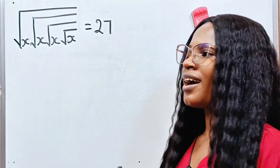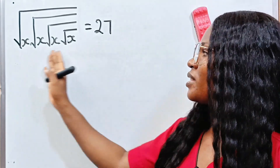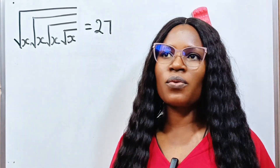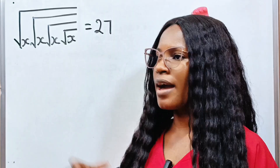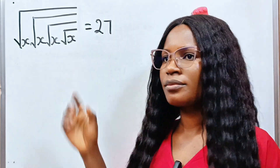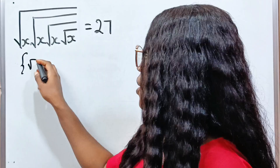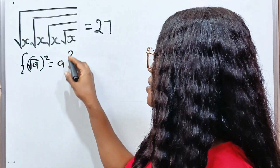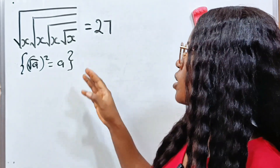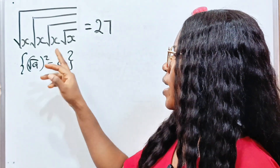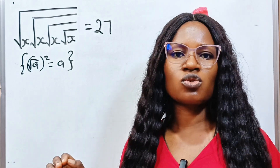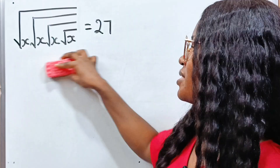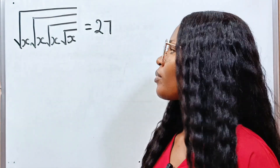Welcome back to my channel. Today we are faced with this problem and we are asked to find the value of x. One thing to note: any time you see a square root problem like this, the key idea is that when you square a square root, you get that number back. So we will square again and again until we have nothing left to square. Let me explain in detail by solving this without wasting much of our time.